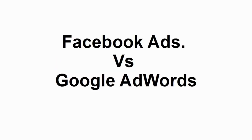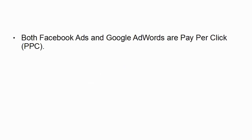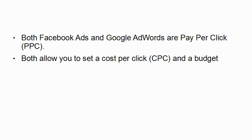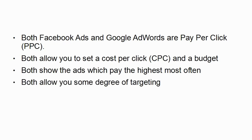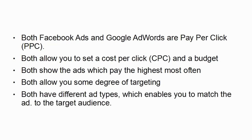So what's the difference between advertising via Facebook ads and advertising via Google AdWords? Well, there are certain similarities. Both Facebook ads and Google AdWords are pay-per-click or PPC — at least Facebook does have a PPC option. Both allow you to set a cost-per-click, otherwise known as CPC, and a budget. Both will show ads which pay the highest most often. Both allow you some degree of targeting, and both have different ad types which enables you to match the ad to the target audience.